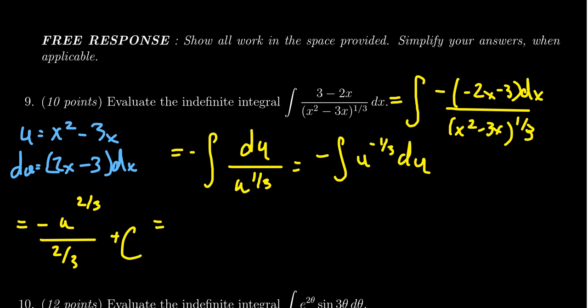Rewriting that, if you divide by two-thirds that's the same thing as times by three-halves. So we get negative three-halves times u to the two-thirds plus a constant.